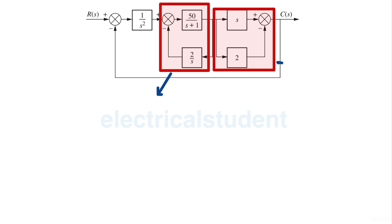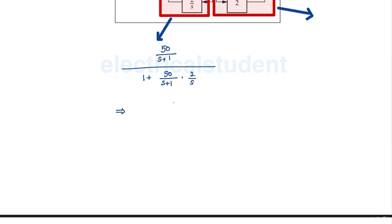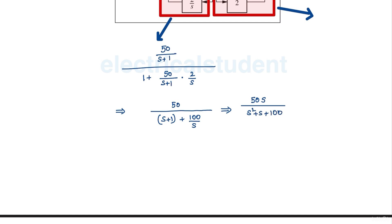We rewrite the feedback loop as 50 over (s+1) divided by 1 plus 50 over (s+1), multiplied by 2 over s. This block reduces to 50 over (s+1) plus 100 over s, which in turn becomes 50s over (s² + s + 100).